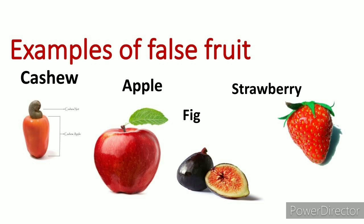Fig (anjeer) is also a false fruit — in fig, the receptacle is the edible part and it participates in the formation of the fruit. Strawberry is also an example of false fruit because in strawberry, the thalamus participates in fruit formation. Jackfruit (kathal) is also a false fruit because in jackfruit, the perianth supports fruit formation. These are some examples of false fruit.